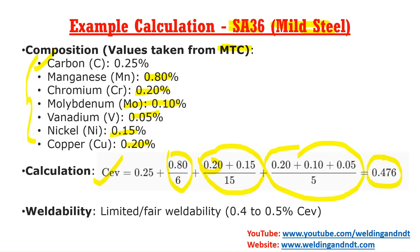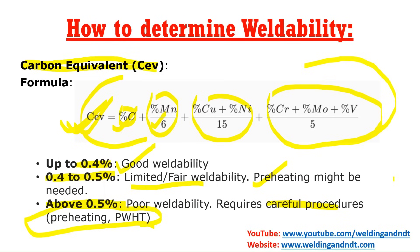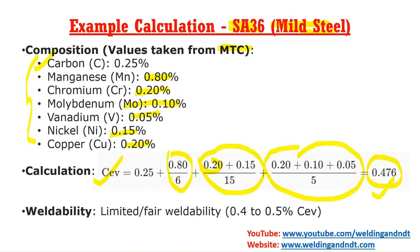After calculating, we get 0.476. This falls between 0.4 and 0.5, meaning it is slightly more than the good weldability threshold, so we call it fair weldability. In this particular material the carbon equivalent is slightly higher than the good weldability limit, so SA36 is a fair weldability material.